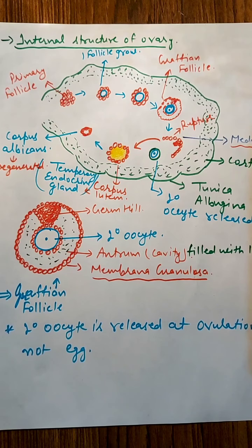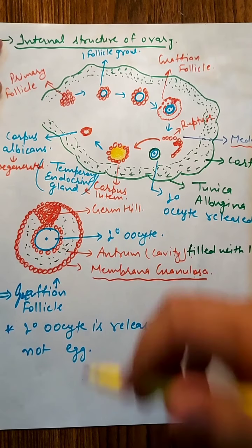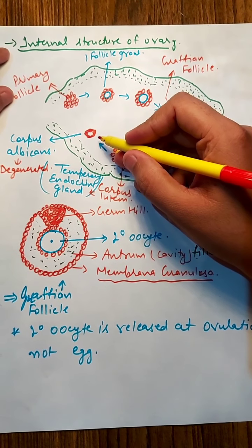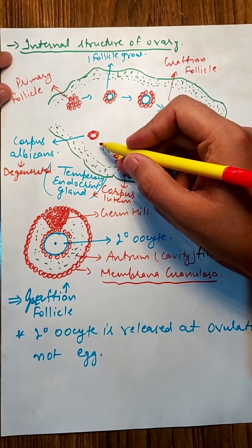Progesterone thickens the endometrium wall and promotes cell division within it, helping in its development. If implantation does not occur, this corpus luteum will start to degenerate, and that degenerated structure is called corpus albicans.